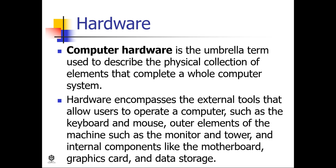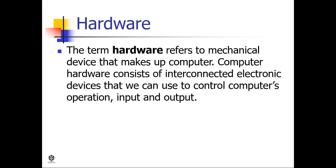Hardware encompasses the external tools that allow users to operate a computer, such as the keyboard and mouse, outer elements of the machine such as the monitor and tower, and internal components like the motherboard, graphics card, and data storage. The term hardware refers to the mechanical device that makes a computer. Computer hardware consists of interconnected electronic devices that we can use to control a computer's operation, input, and output. Examples of hardware are CPU, keyboard, mouse, hard disk, and so on.